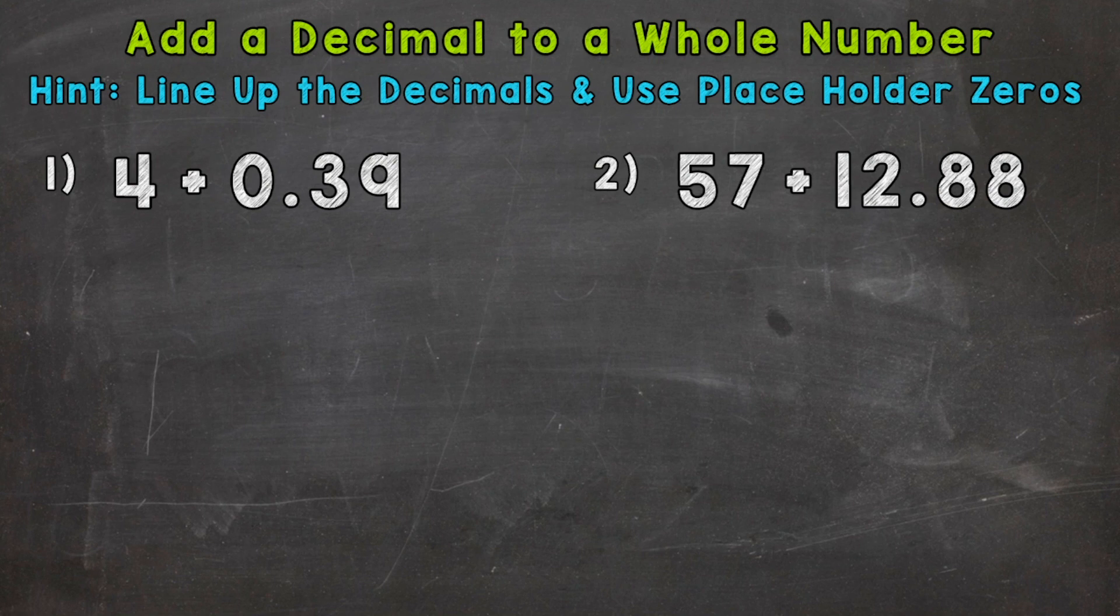So we have a four and you may be asking, how are we supposed to line up the decimals if that four doesn't have a decimal? Well, the decimal isn't shown in the original problem, but every number has a decimal, even whole numbers. And we can place the decimal right after any whole number.